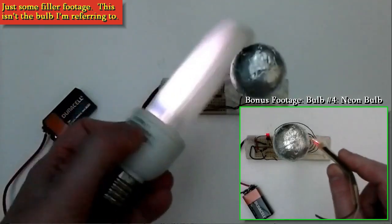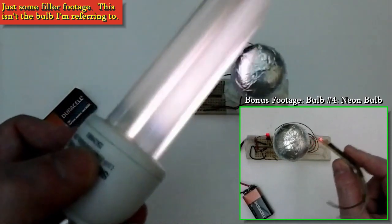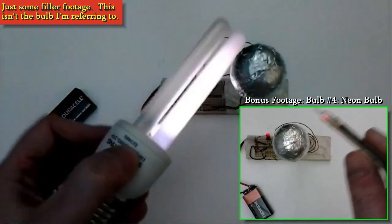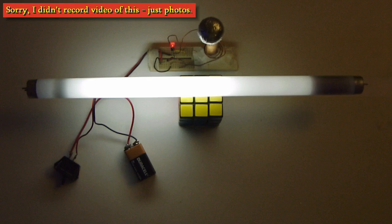My fluorescent light went bad. It's one of those 18-inch, 15-watt fluorescent bulbs. Since it didn't work anymore, I decided to see if my Tesla coil would light it up. It did.